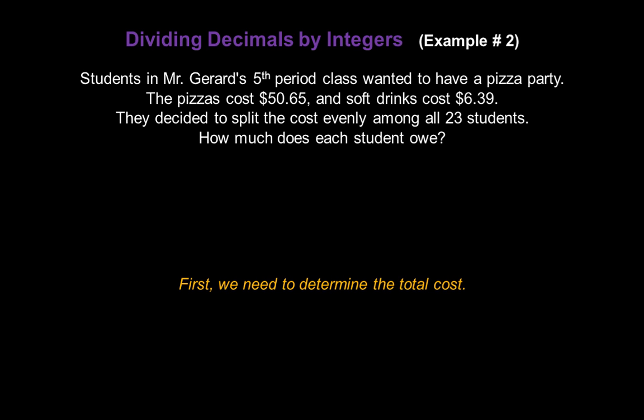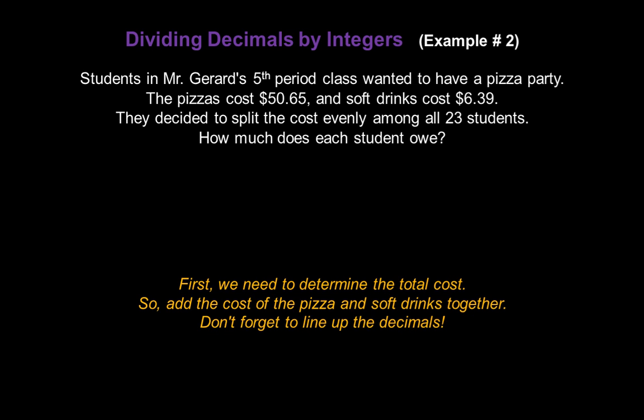They decided to split the cost evenly among all 23 students. So how much does each student owe? Well, first we need to determine the total cost of the pizza party. That means we have to add the cost of the pizza and the soft drinks together. Now, they're decimal numbers, so don't forget we're going to line up the decimals to add. 50.65 plus 6.39, and when you add, that gives you 57.04.